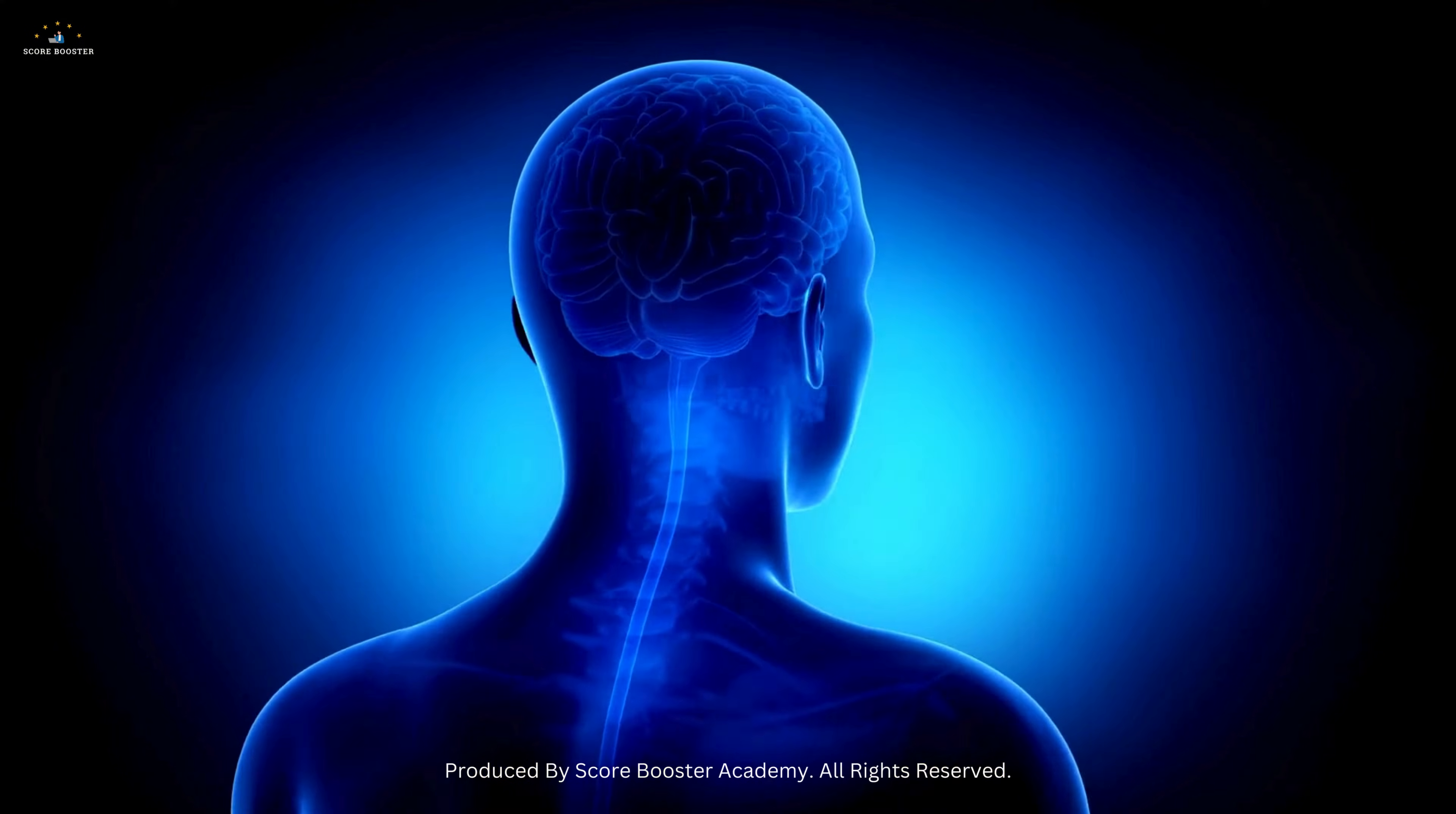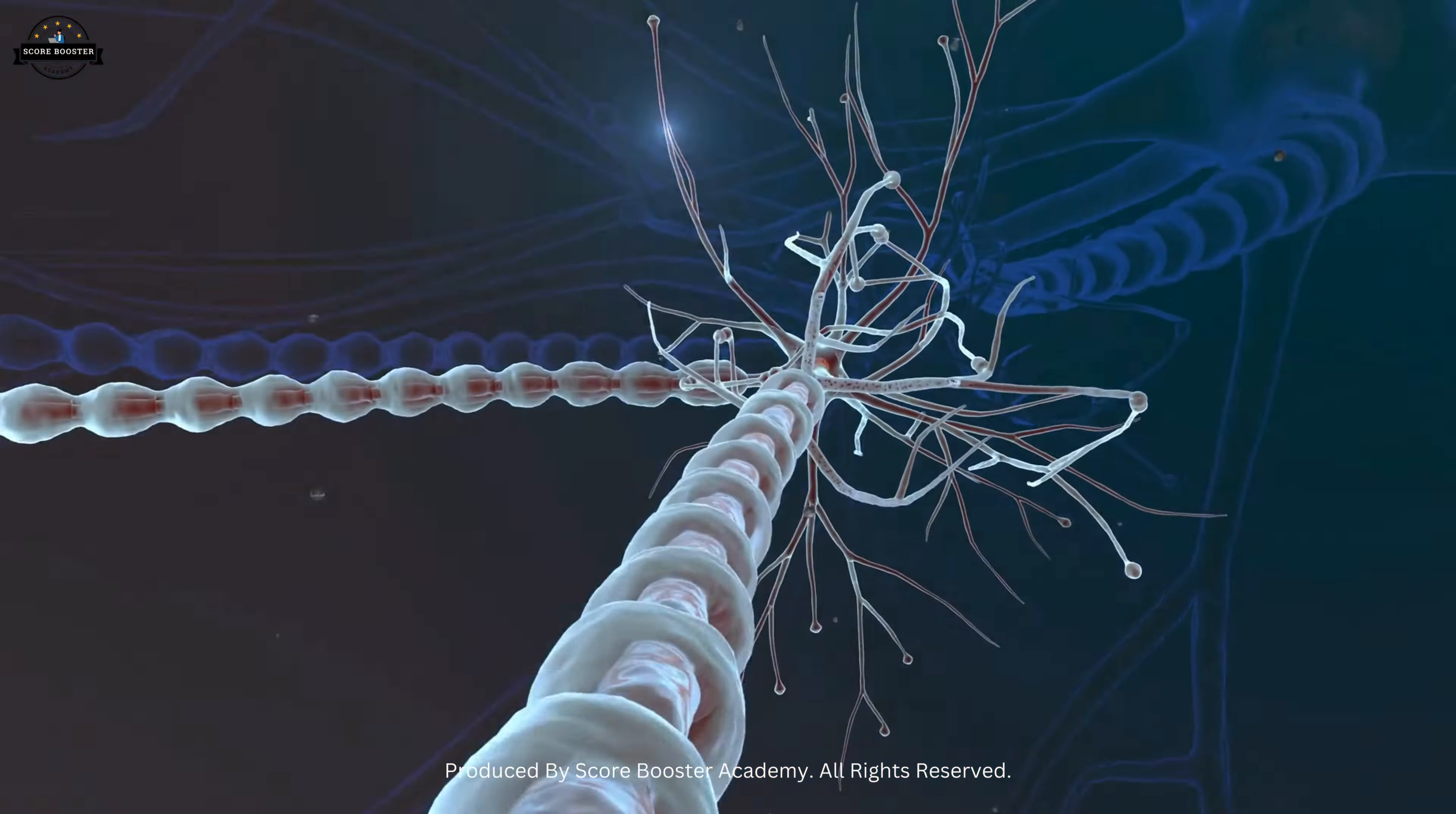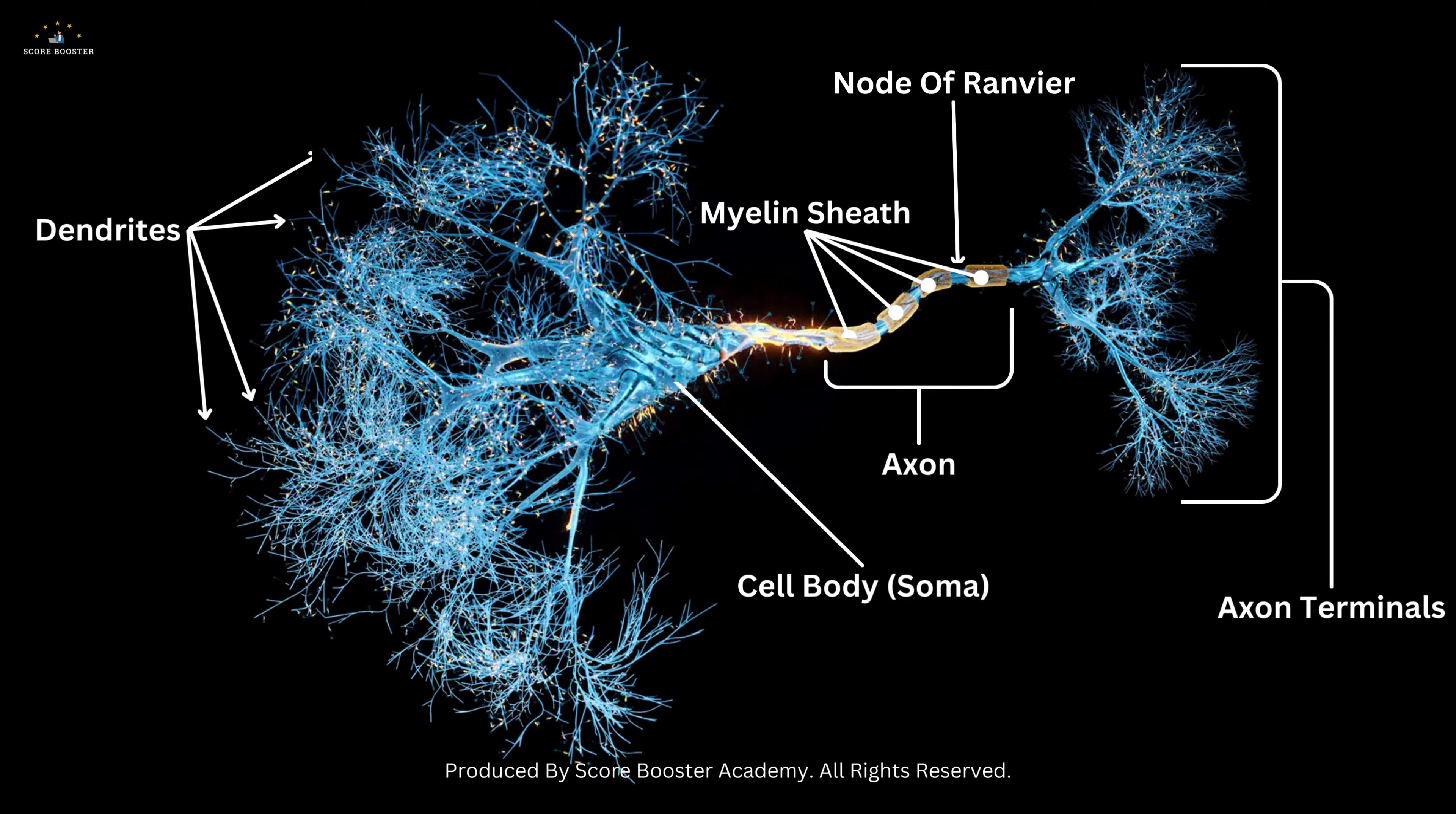Delving deeper into the structure, neurons are the fundamental units of the nervous system, specialized to transmit information. Each neuron has a cell body, dendrites, and an axon.